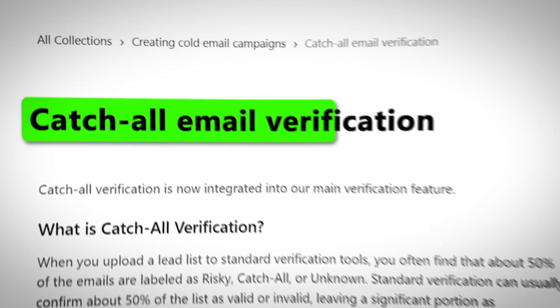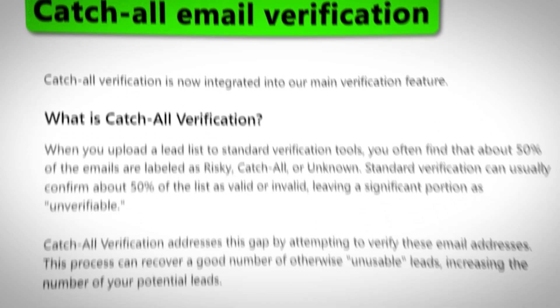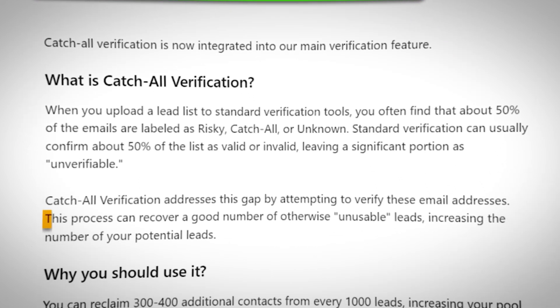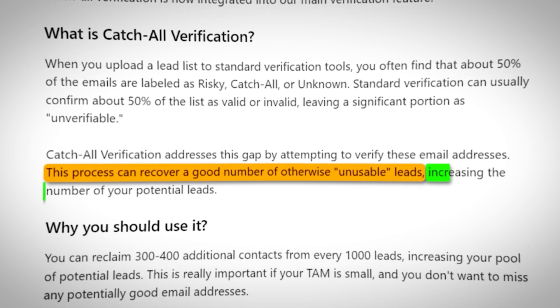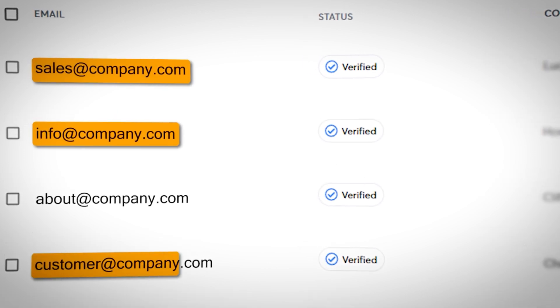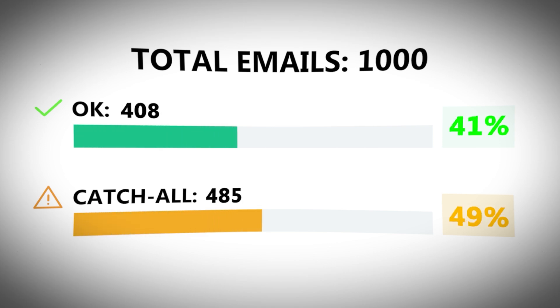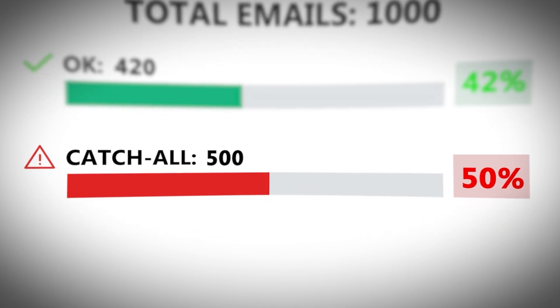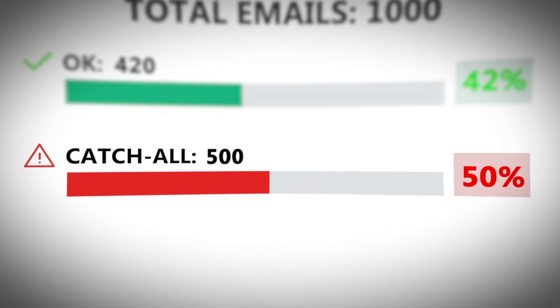With Instantly's new catch-all verification system, it goes through a three-step process of verifying emails to ensure you are getting the most verified emails possible — including the catch-all. Catch-all means emails like info@, sales@, or customer@, where it goes to multiple emails. Traditional verification tools won't verify those, so you could be missing out on up to 50% of unverified people you're not sending emails to.